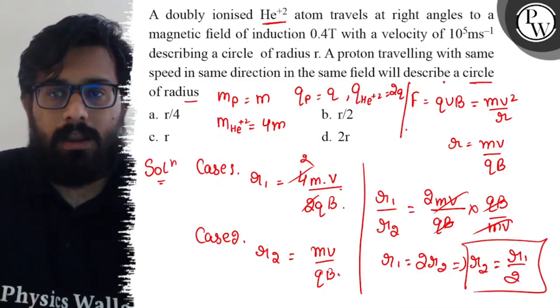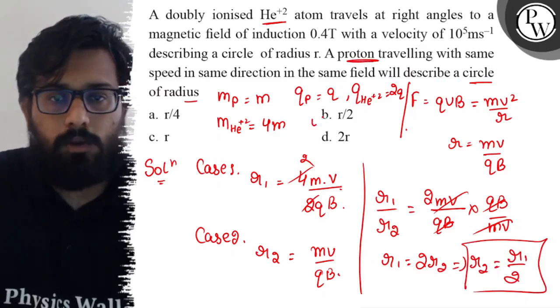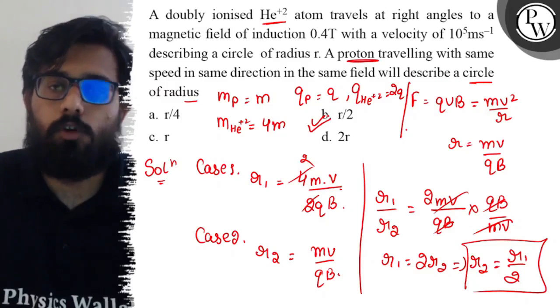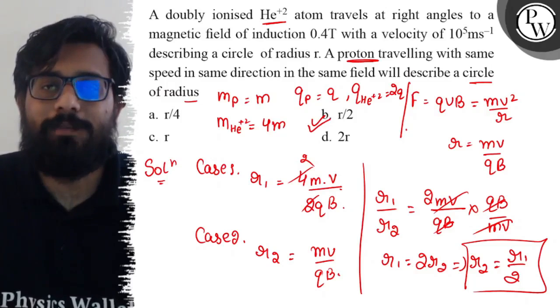Okay, so the radius you get in case of the proton will be r/2, which is option B. So your B option is absolutely correct and I hope you got the concept of this question.